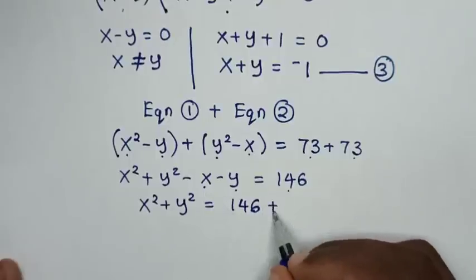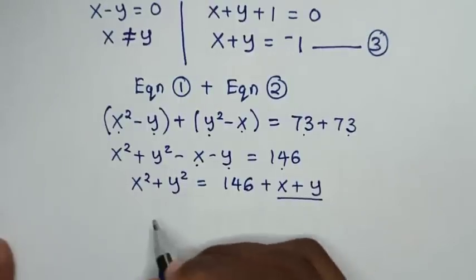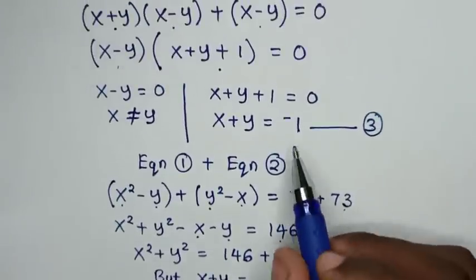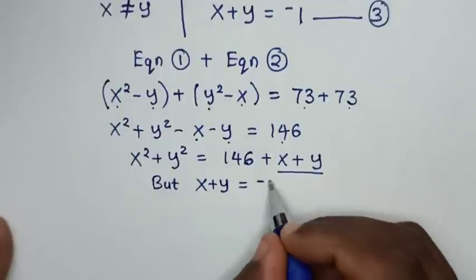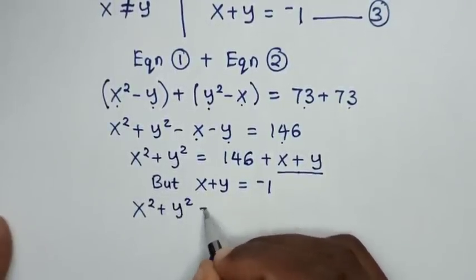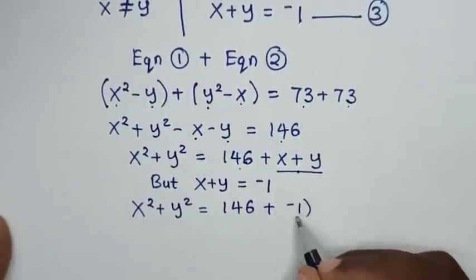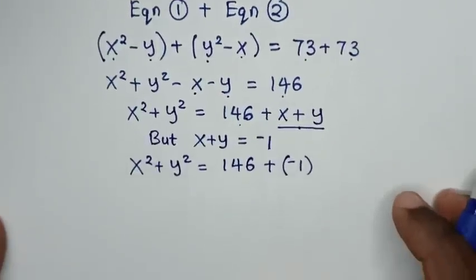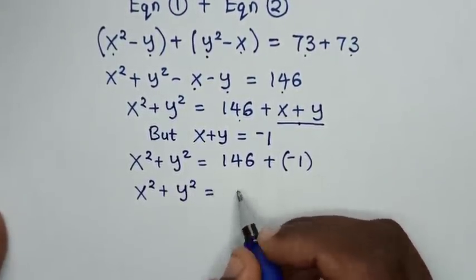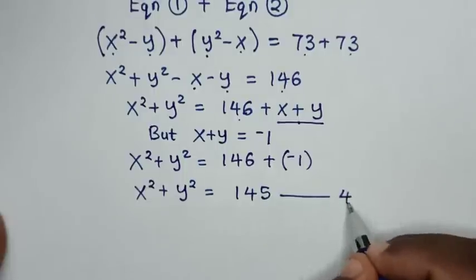We take negative x and negative y to the right side, so x squared plus y squared equals 146 plus x plus y. But x plus y equals negative 1 from equation 3, so substituting gives x squared plus y squared equals 146 plus (negative 1), which is 145. We call this equation 4.